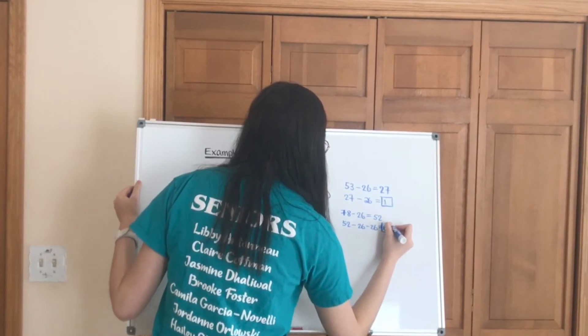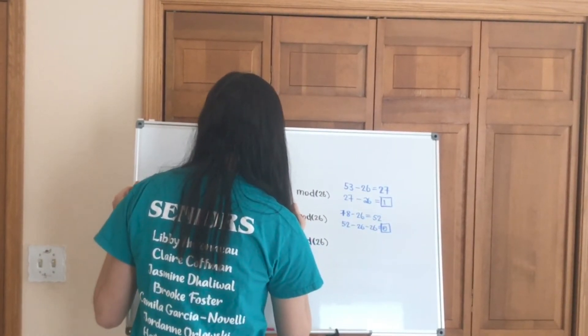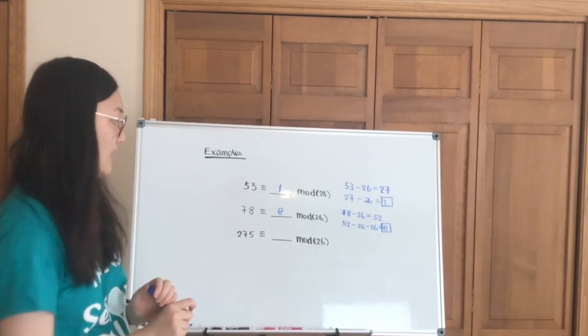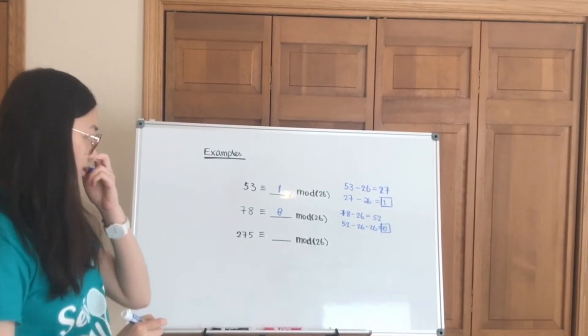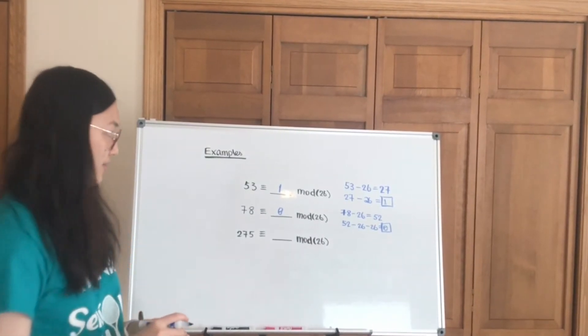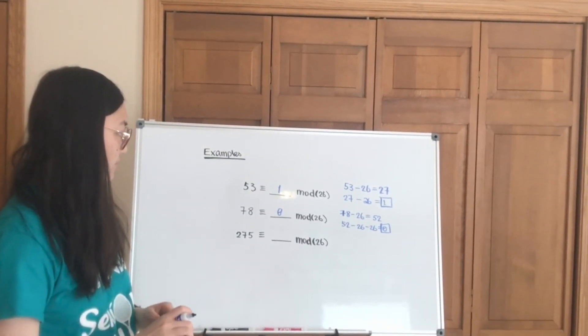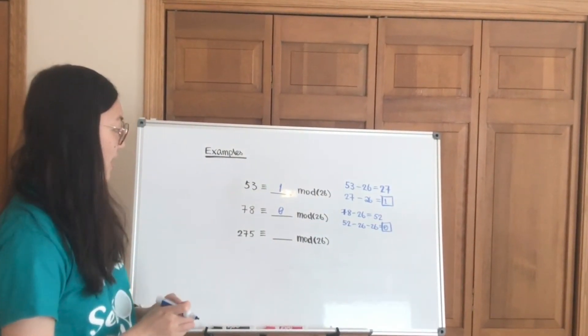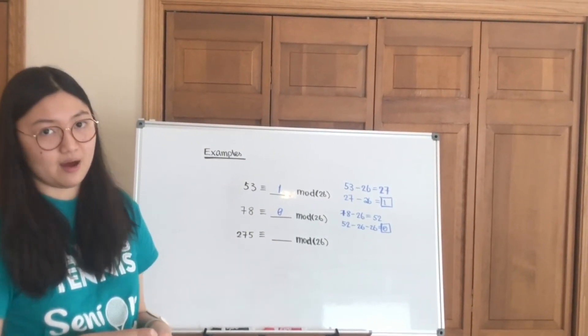So 0 will be the equivalence of 78 in mod 26. So as you can see, this is basically applying the remainder of, say, divided by 26 by a number, and that's basically what you get for the mod value.